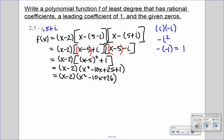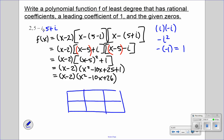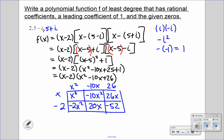We can now use our box method. We have x minus 2 times x squared minus 10x plus 26. Using the box method: x cubed minus 10x squared plus 26x, then negative 2x squared plus 20x and negative 52. Combining like terms, our final answer for this function is f of x equals x cubed minus 12x squared plus 46x minus 52.